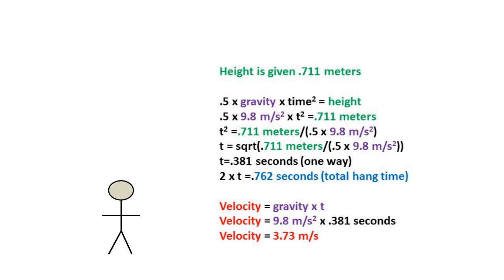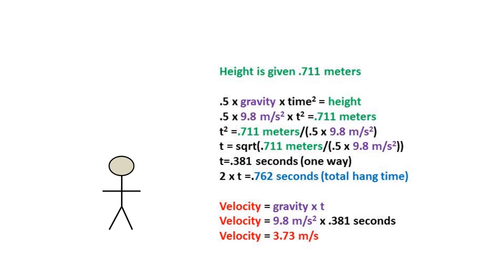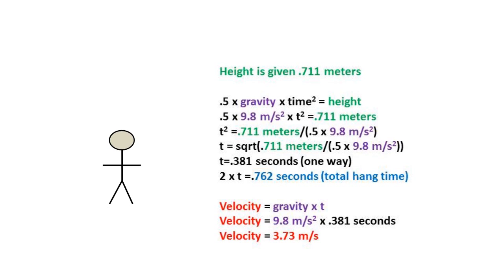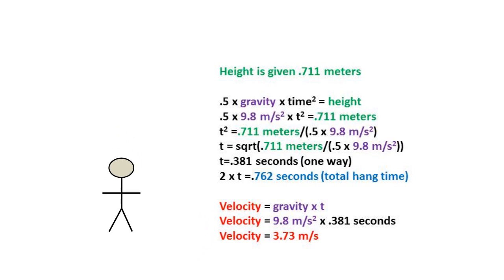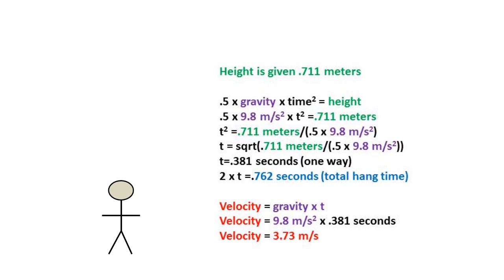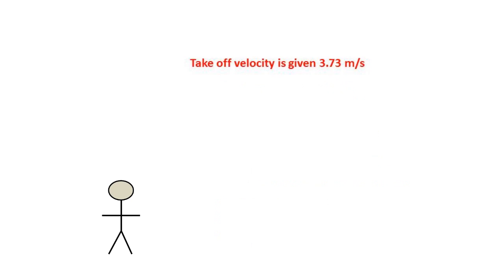Recall that velocity initial equals velocity final. To solve for velocity, we treat the basketball player as falling from the peak down. Using the equation velocity equals gravity times time, and plugging in the fall time of 0.381 seconds, we get 3.73 meters per second as both our initial and final velocity.